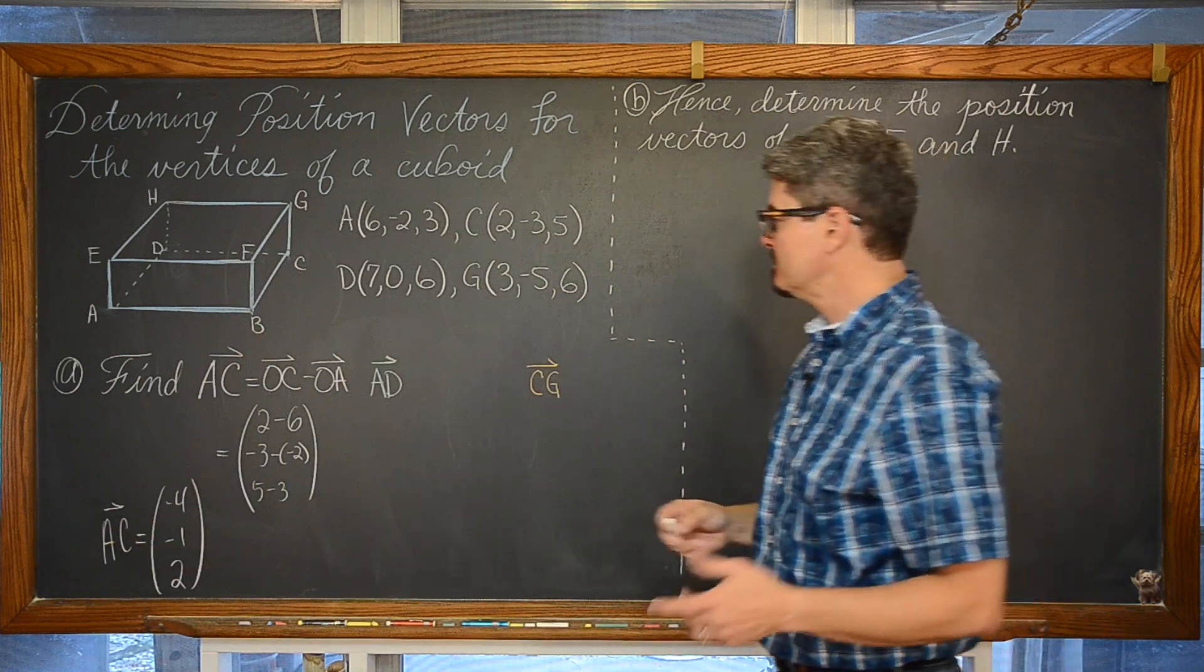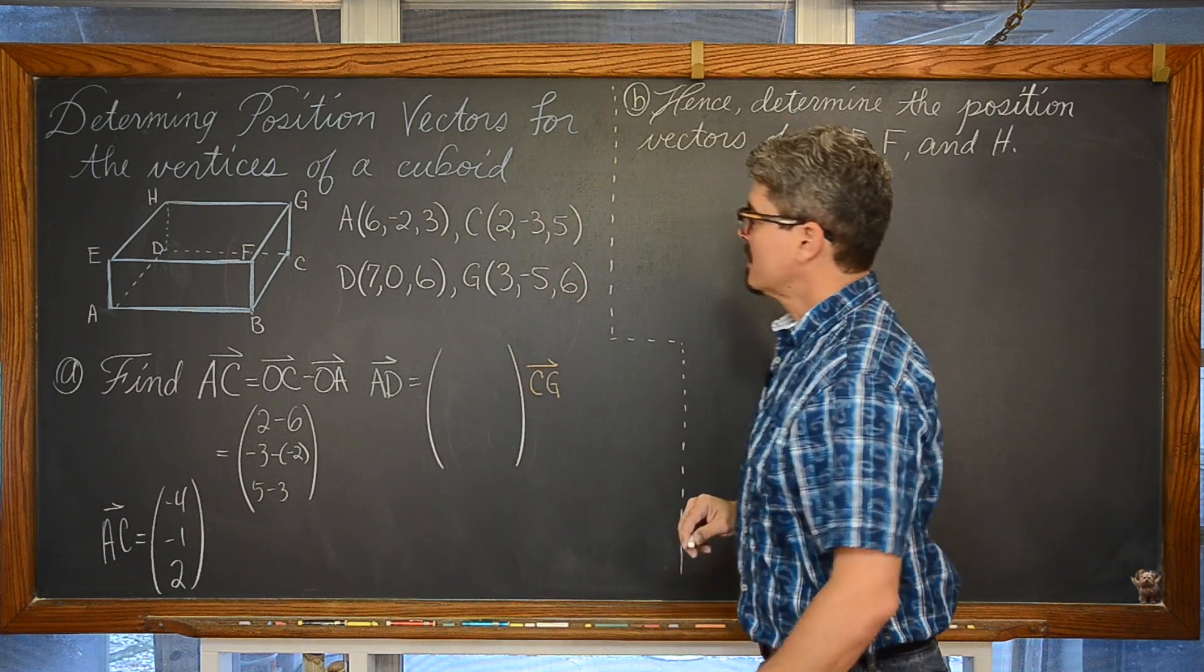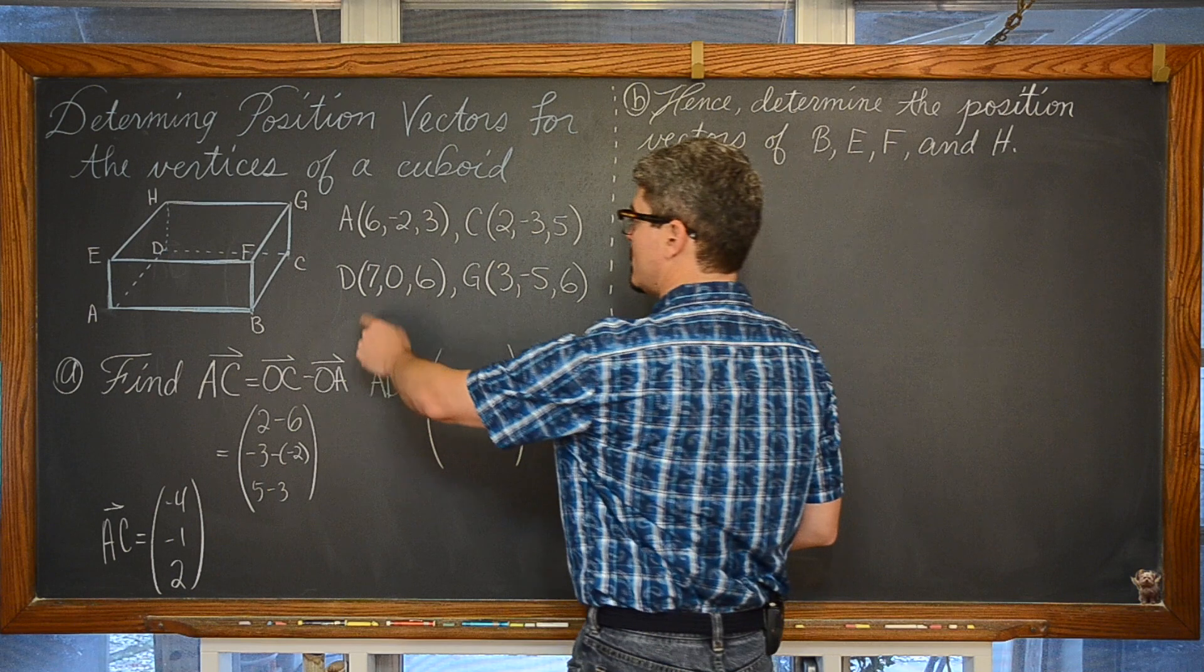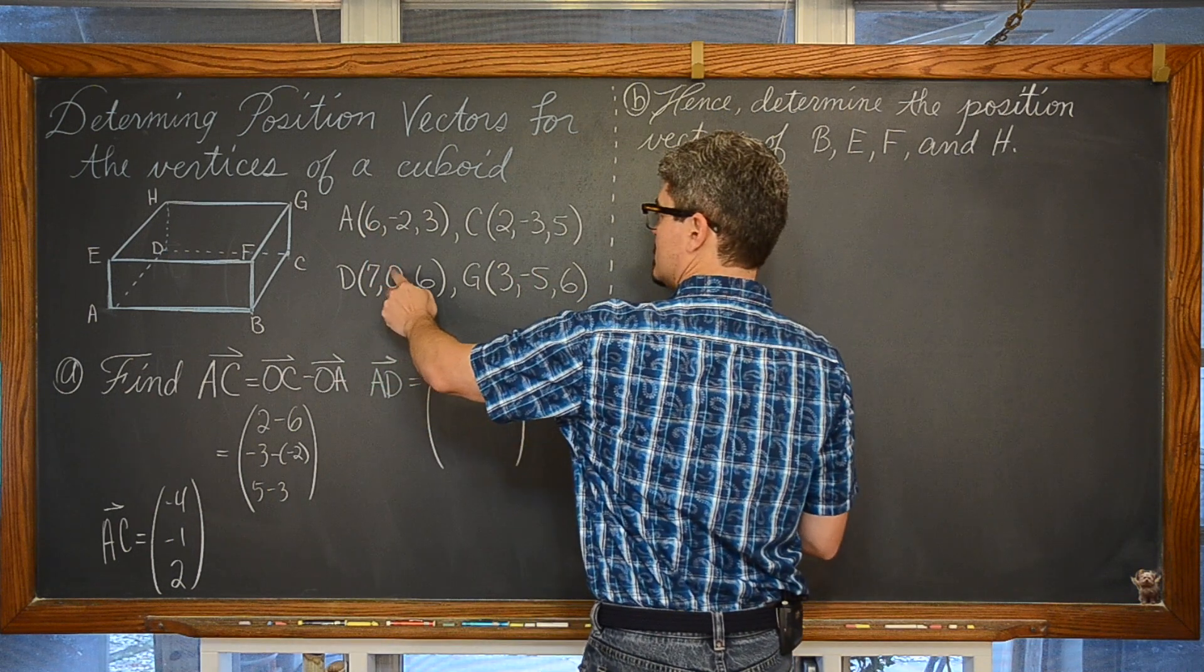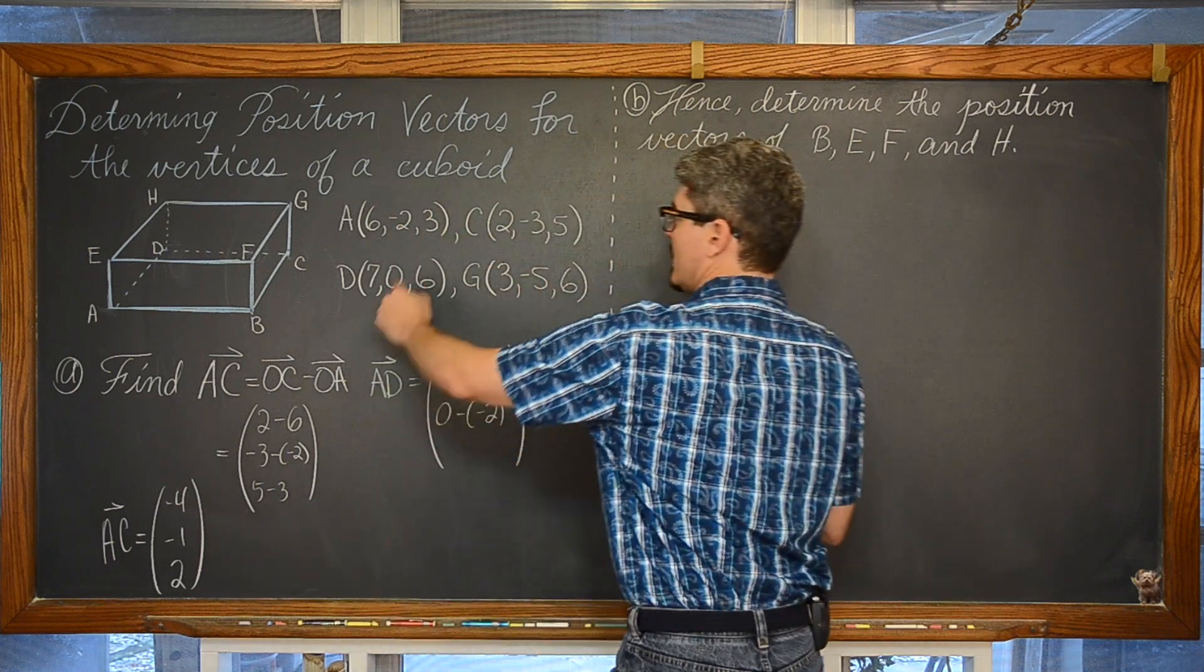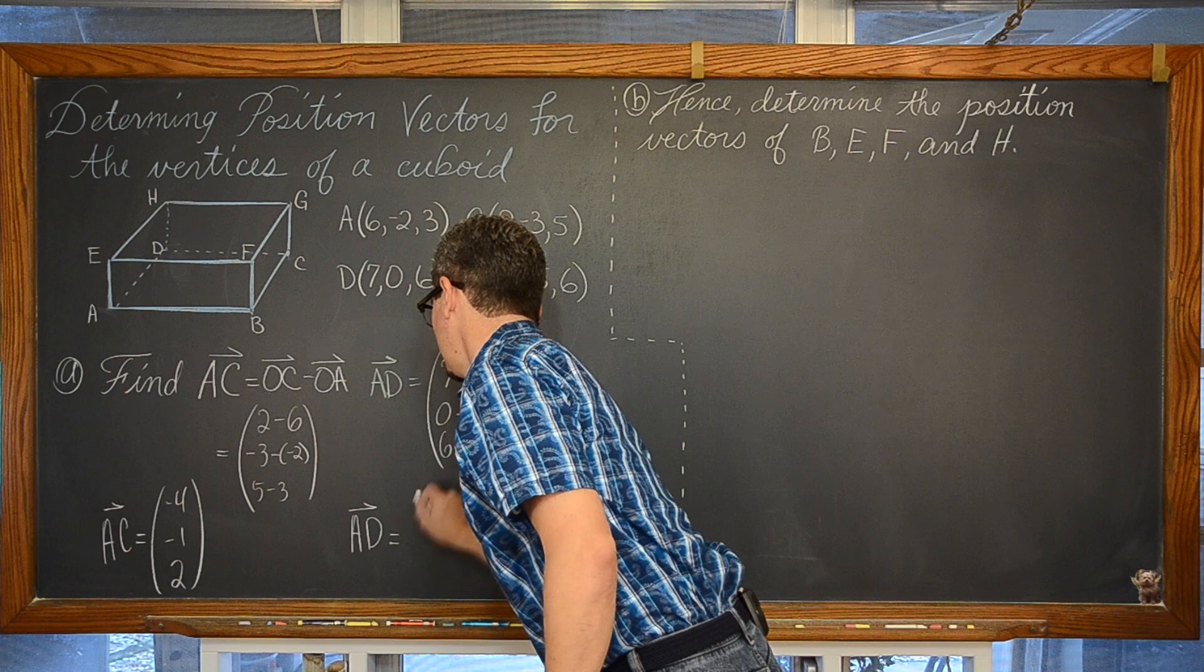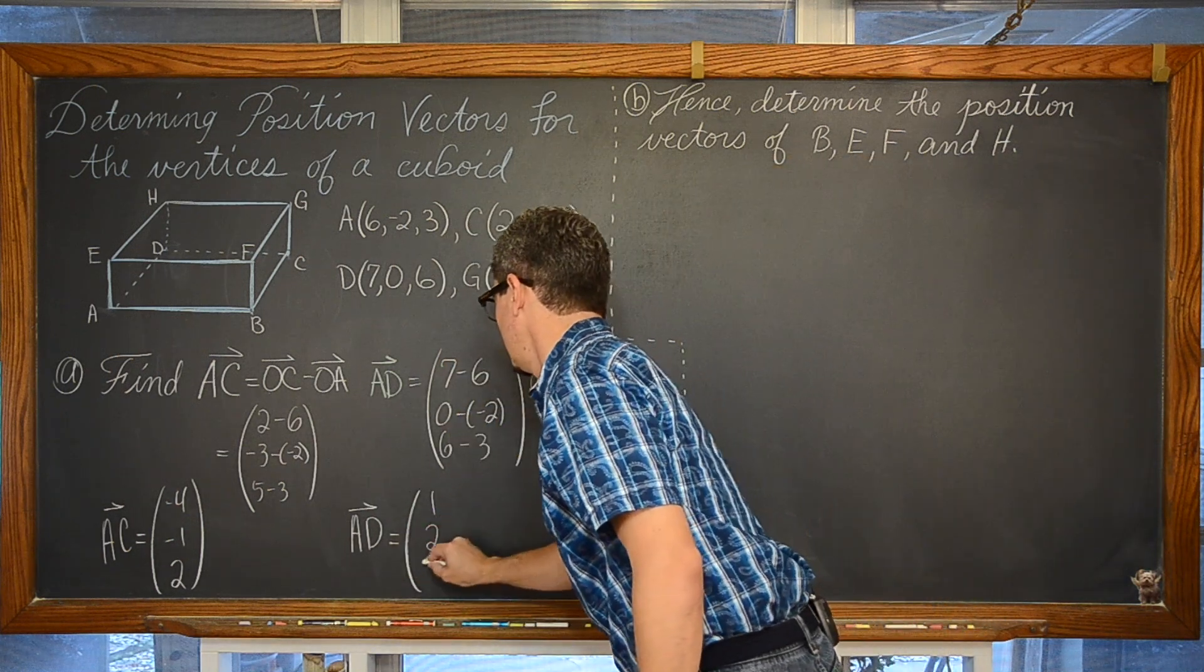Vector AD is going to be the result again, terminal minus initial, each of those corresponding components. So we have 7 minus 6, 0 minus negative 2, and 6 minus 3, giving us that vector AD is equal to 1, 2, and 3.